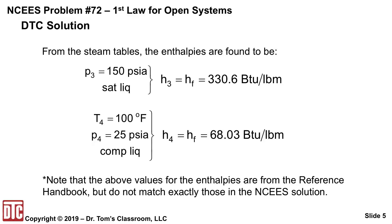From the steam tables in the reference handbook, we get the following enthalpies. H3 is really HF, equal to 330.6 BTUs per pound mass. H4 is really a compressed liquid, so using the temperature — remember, there are no compressed liquid tables in the reference handbook, so you use the temperature at the particular pressure because the values are more variable with temperature than with pressure. These values are from the reference handbook, though they're not exactly what you see in the NCES solution, but not too far off.